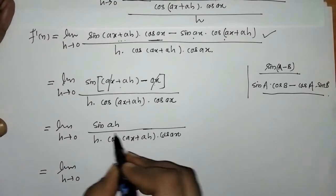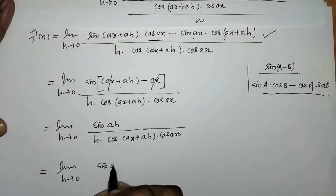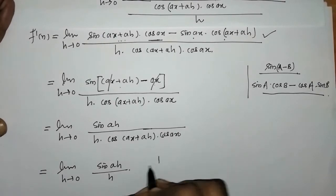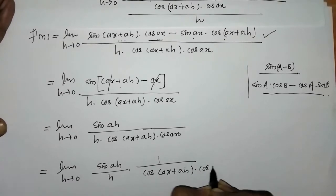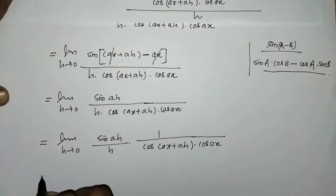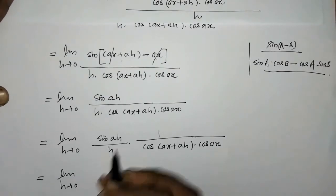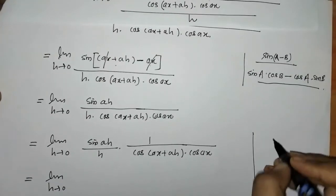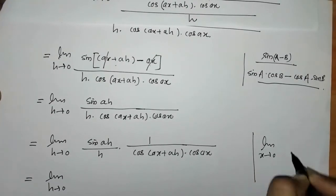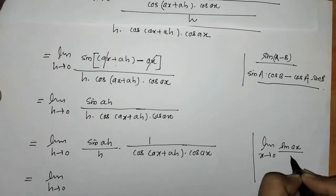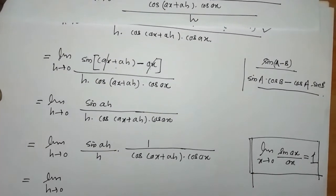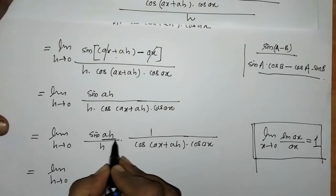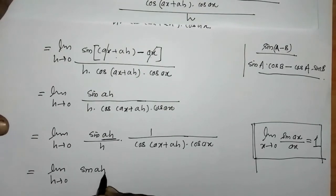Now we put the limit and we can write sin of ah upon h. We know the standard result: limit x tends to 0, sin of ax upon ax equals 1. So we adjust sin of ah to have ah in the denominator by multiplying by a, and we apply this limit.